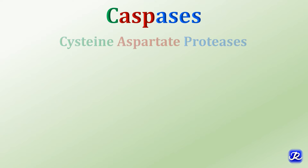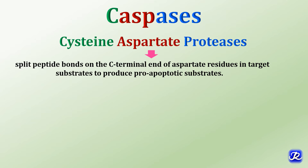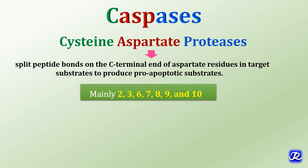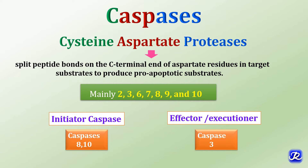Caspases are cysteine aspartate proteases that split peptide bonds on the carboxy-terminal end of aspartate residues in target substrates to produce pro-apoptotic substrates. The main caspases are 2, 3, 6, 7, 8, 9, and 10. Activation of caspases is a cascade — activation of one leads to activation of others. Caspases 8 and 10 are initiator caspases, while caspase 3 is the effector or executioner caspase that brings about apoptosis.